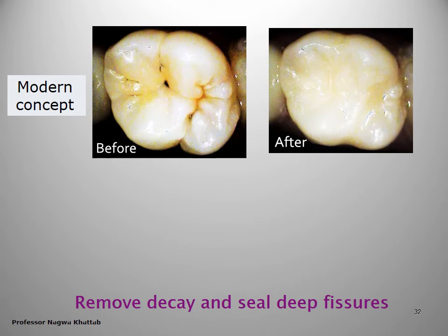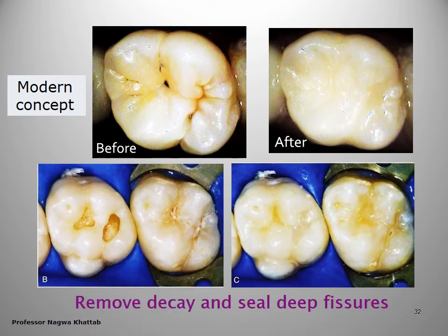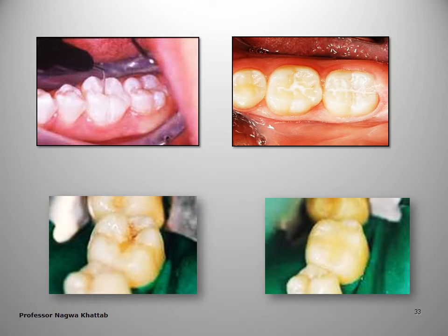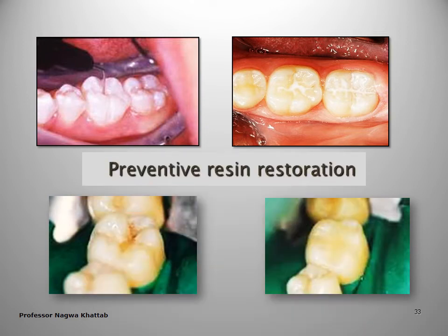For the modern concept in Class 1 preparation, you remove the decay only and seal the adjacent fissure, concentrated on the preservation of tooth structure — no extension for prevention. Access only the carious lesion and seal the adjacent fissure. This removal of the carious lesion with sealing of the adjacent fissure is known as preventive resin restoration.